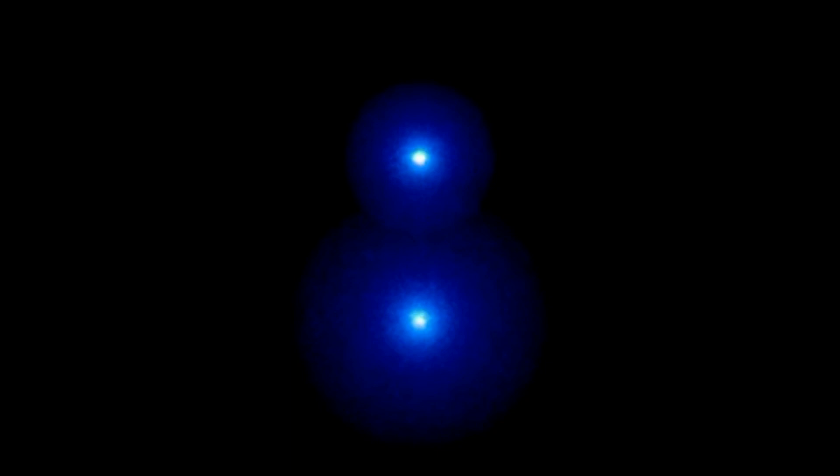The team's computer simulations show, here seen from the side, that when the two clusters smashed together, the dark matter fell to the centre of the combined cluster and bounced back out.